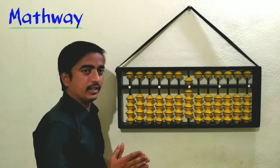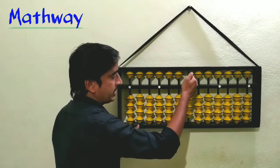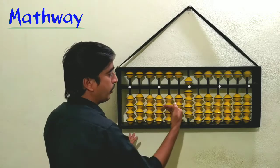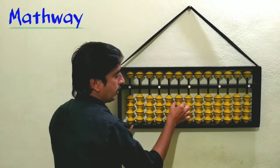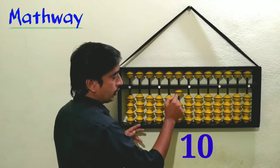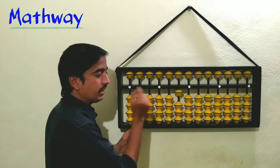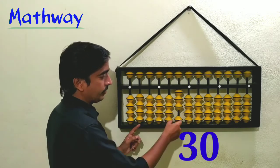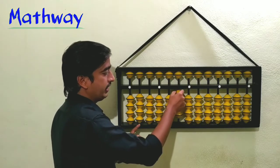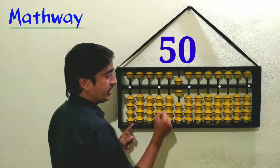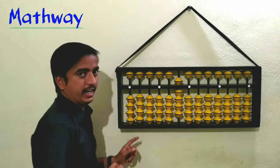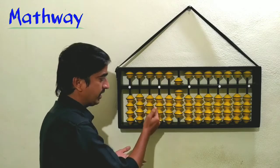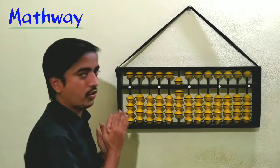To show ten, once the ones place is completely filled, we move to the next rod — the tens place rod. Make the ones place zero and bring one bead on the tens rod to touch the answer line — that is ten. Twenty is two beads on the tens rod, thirty is three, and so on up to forty. To show fifty, bring the upper bead of the tens rod down — that is fifty. Sixty, seventy, eighty, ninety follow the same way. For one hundred, move to the hundreds rod, and so on for thousands and ten thousands.